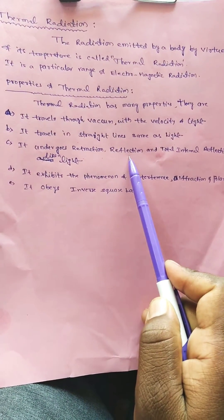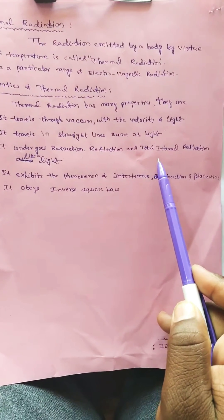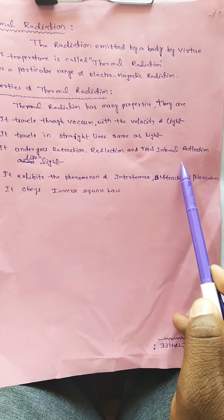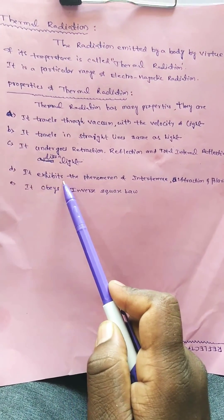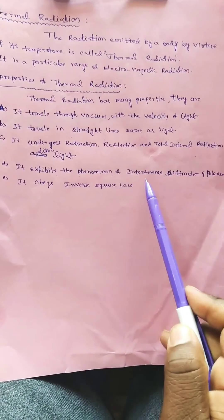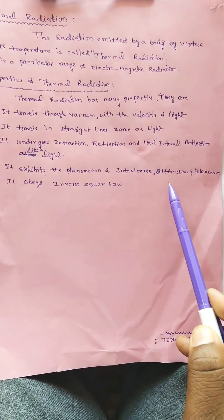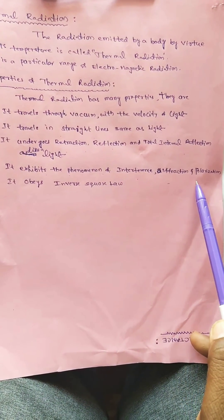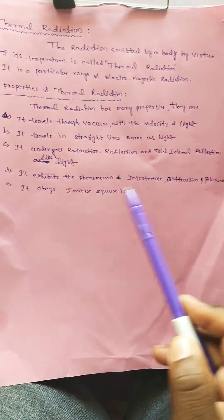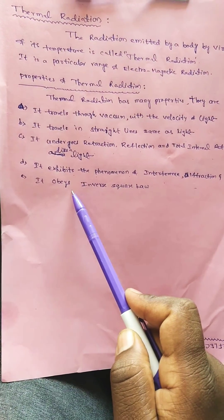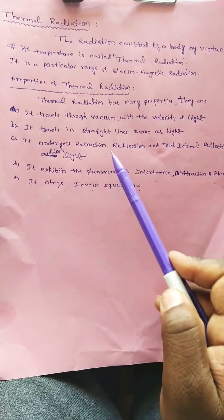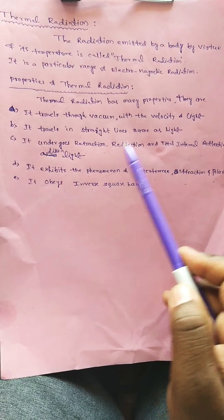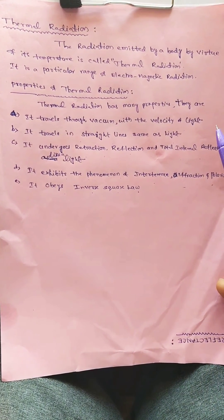It exhibits the phenomena of interference, diffraction, and polarization. It obeys the inverse square law. These are the properties of thermal radiation. Thank you.